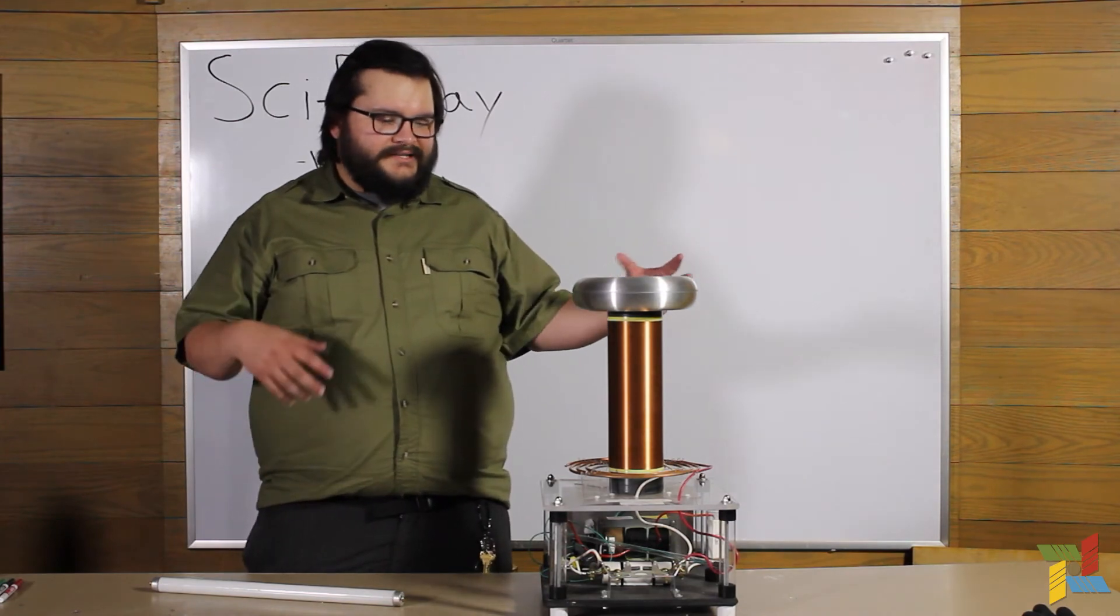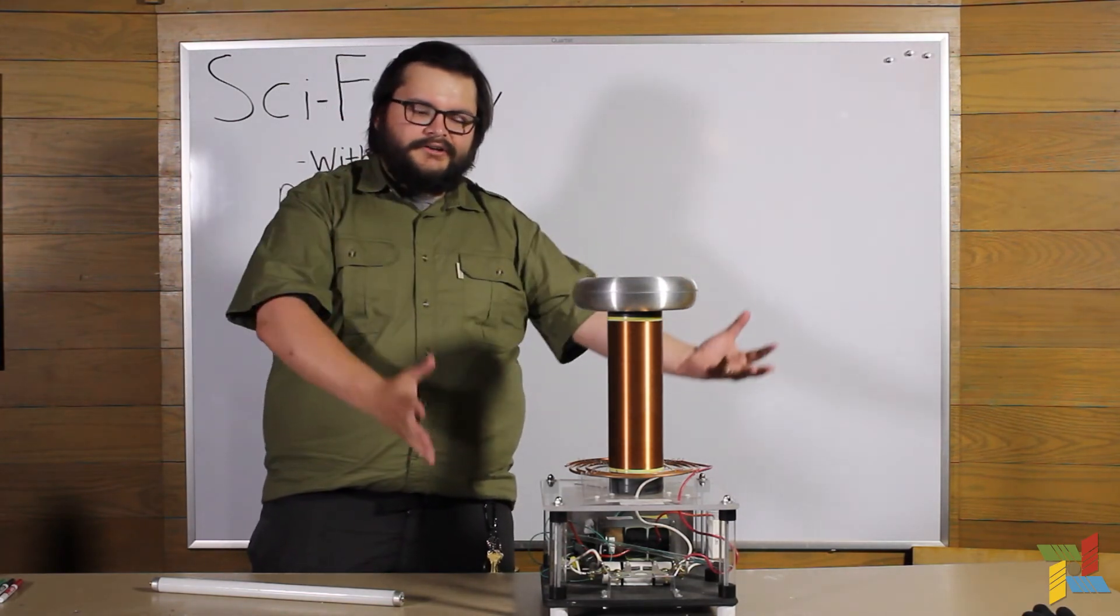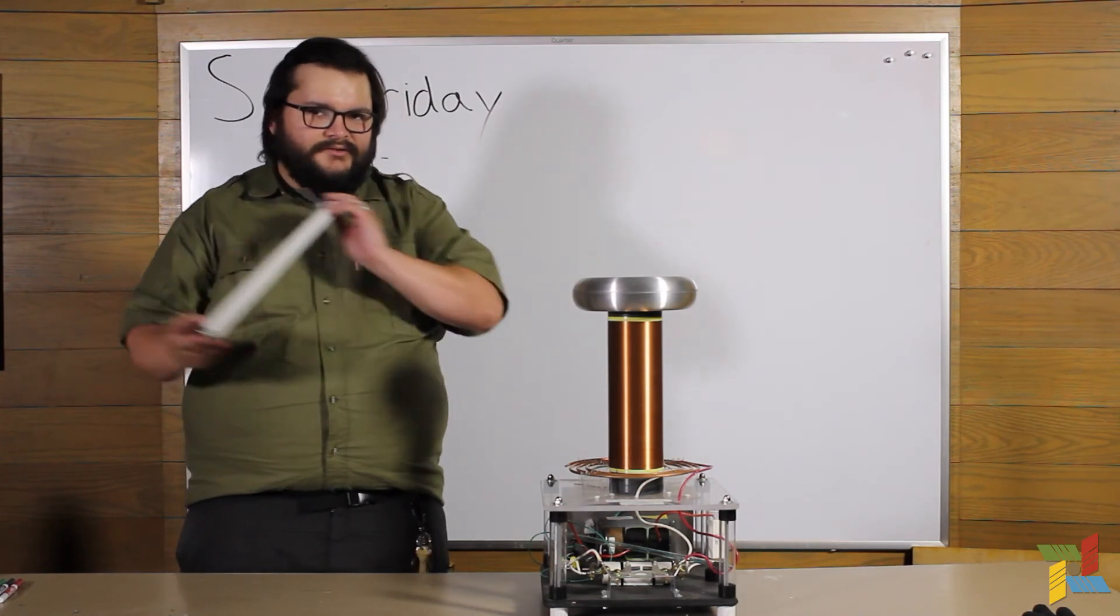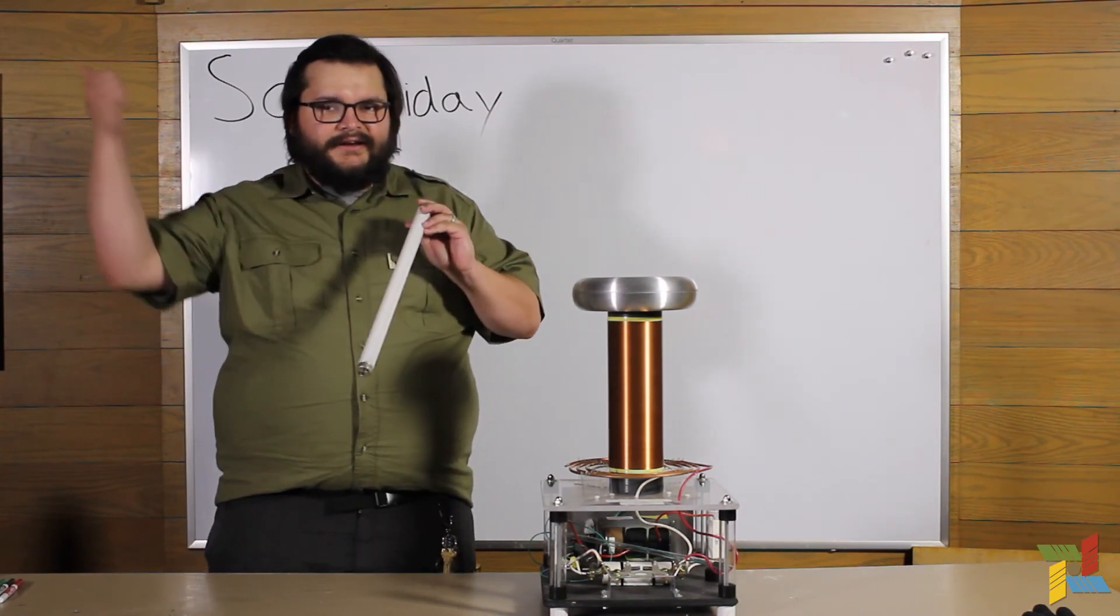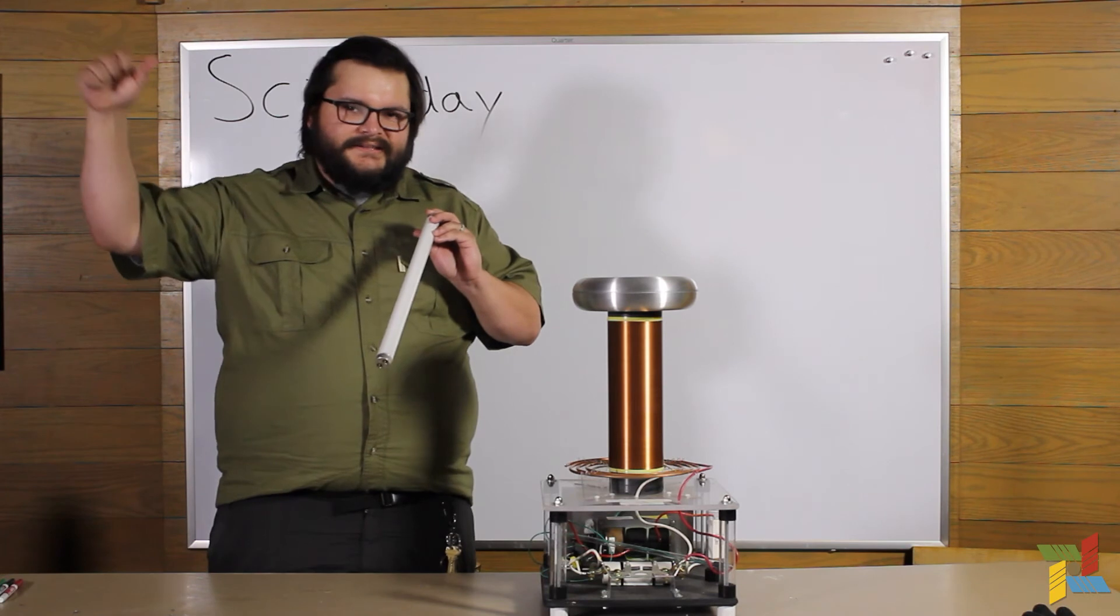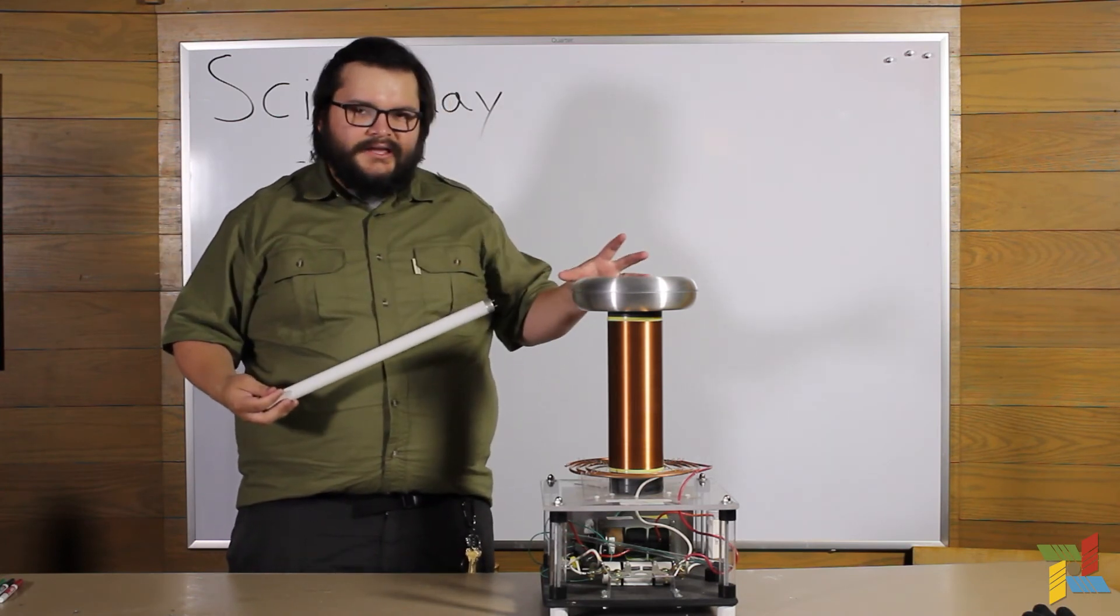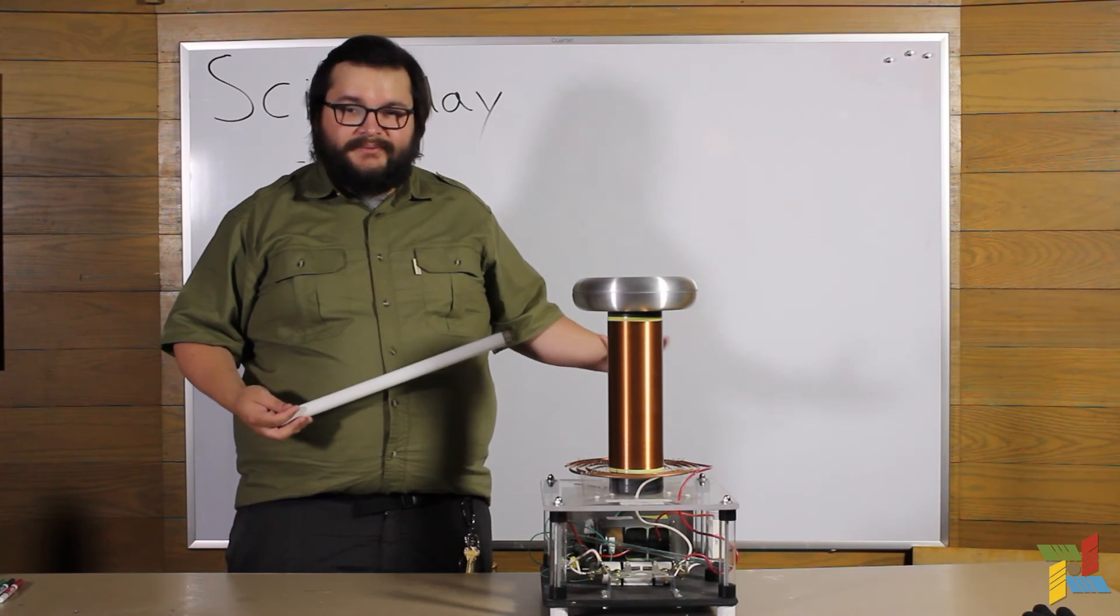And so this Tesla coil, what it does is it puts electrical energy into an area around it. And so as this bulb gets closer, those electrons gain energy, go up a level, and then as they lose energy, they put light out. And so the electric field is what creates that extra energy to begin with.